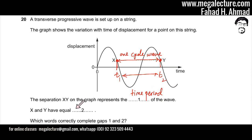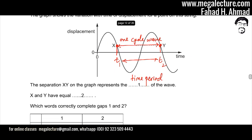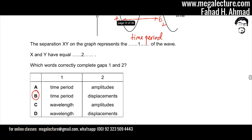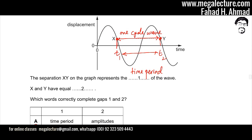Then it says that x and y have equal something. Points x and y are getting displaced to and fro — this is the center point, the midpoint — and these points on the string are getting displaced to and fro, so they represent equal displacement. One answer would be time period and the other would be displacement. Remember, amplitude is the maximum displacement — in this graph, the maximum displacement shown here is the amplitude.